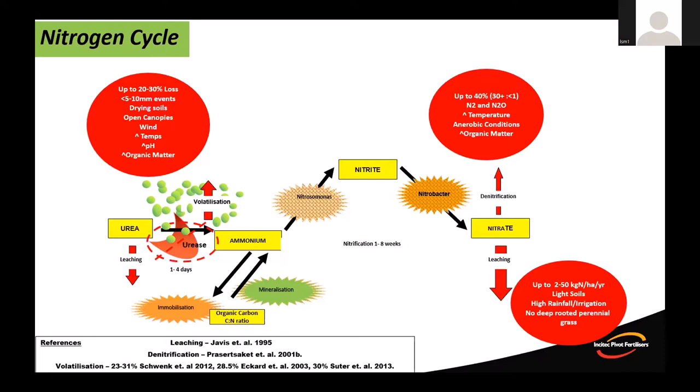There are potential benefits from logistics and application management on farm — for example, using UAN for a boom spray and incorporating an insecticide or a herbicide. But essentially, the way a plant sees and takes up nitrogen, it doesn't distinguish between products.